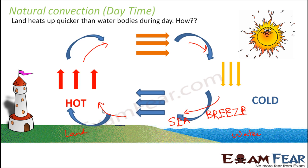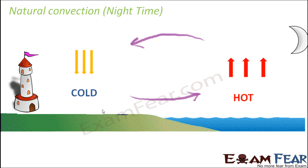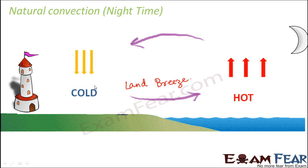Now what happens during the night? Exactly the opposite thing happens. At night, the land gets colder quickly — just as it heats up quickly, it cools down quickly too. Comparatively, the ocean remains hot. So the hot air over the ocean moves up, a vacuum is created, and it is filled by cool air coming from the land. This is known as land breeze — it happens during nighttime, flowing from land to sea.